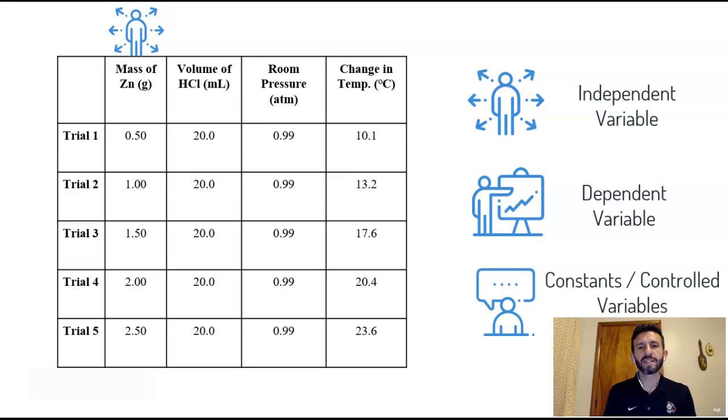What's going to be our dependent variable? What's the thing that changed that we were probably observing for? That would be the change in temperature. And then what were the things that were controlled that we kept constant? Well, that was the volume of hydrochloric acid and the atmospheric pressure in the room. Everything was kept constant so that we could see if we added more zinc to the acid, would it change the temperature of the acid? And we see in this case that it does.